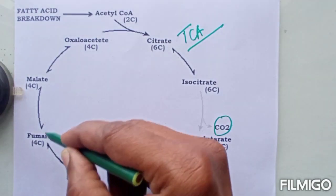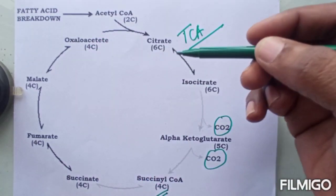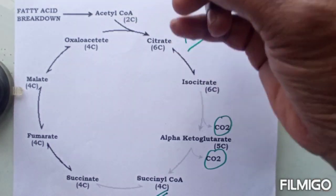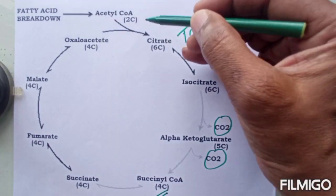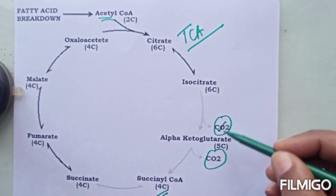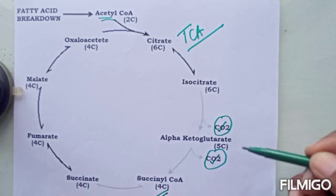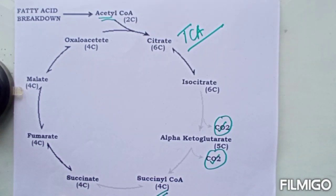Then succinate, fumarate, malate, and back to oxaloacetate — a 4-carbon compound. In the TCA cycle, whether acetyl-CoA is formed from fatty acid breakdown or glucose breakdown, the acetate portion of acetyl-CoA is lost in the form of carbon dioxide — two carbons lost as CO2. So this cannot be utilized. What germinating seeds and some of these organisms do is follow the glyoxylate cycle instead.